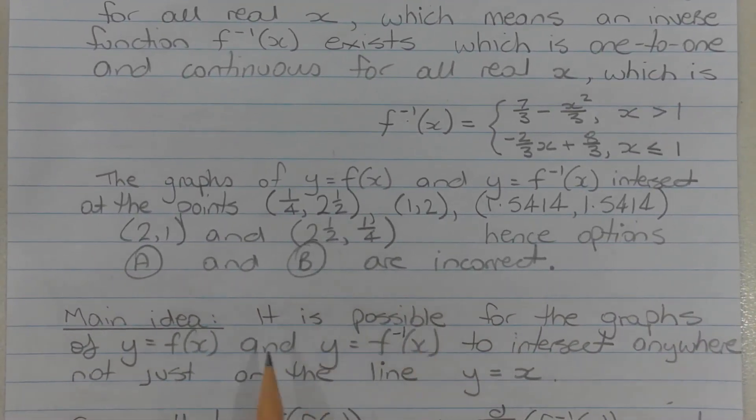Now the main idea here is that it is possible for the graphs of y = f(x) and y = f^(-1)(x) to intersect anywhere, not just on the line y = x.